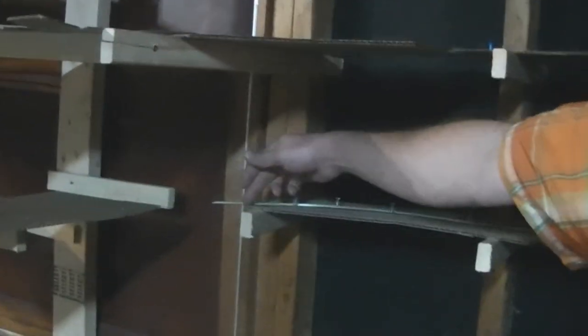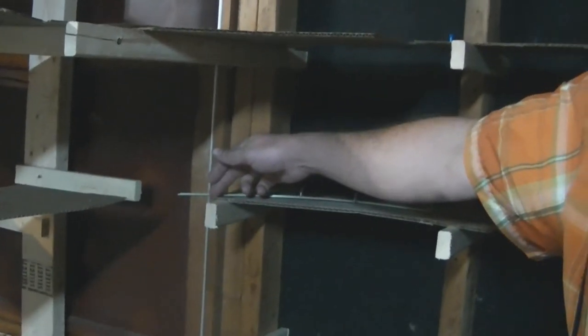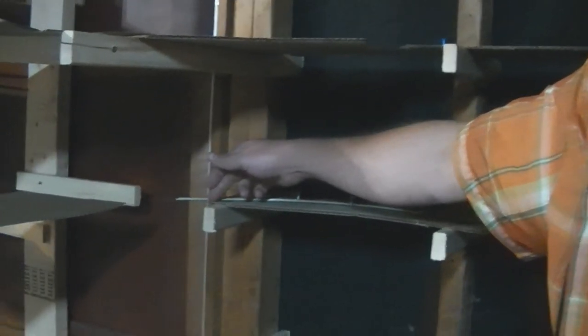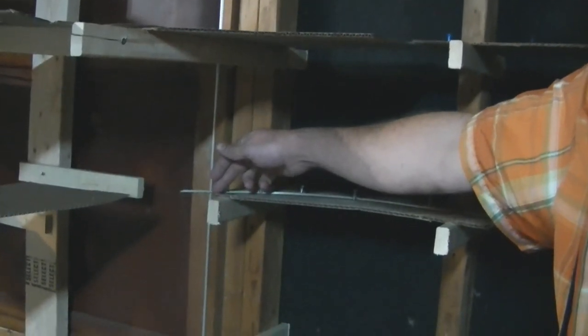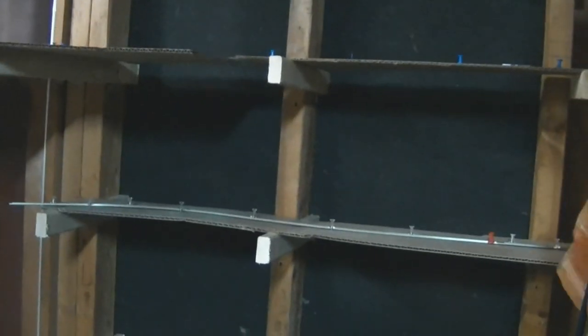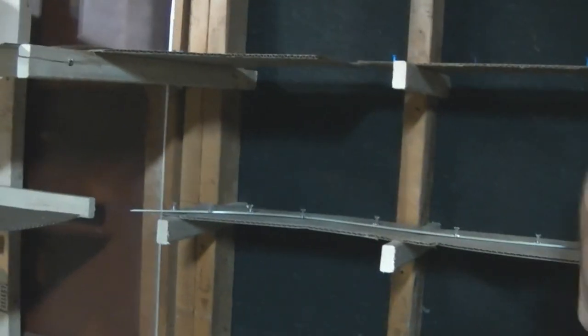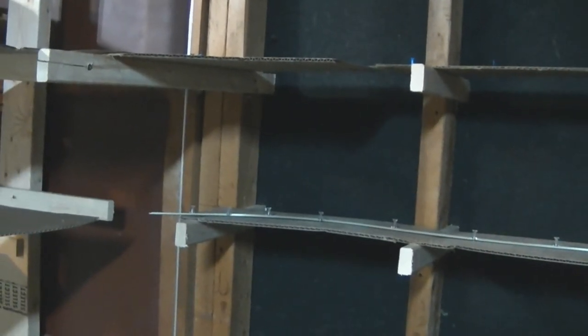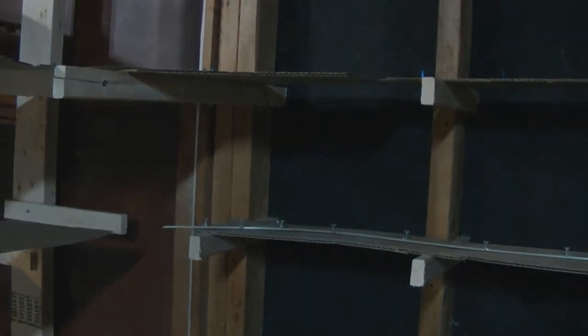I ran out of flex track here. There's 50 pieces of flex track in this main line from the hidden staging yard at Mount Vernon, at the throat of that yard to this point right here. It's 125 feet of main line. We get this readjusted, we'll get the rest up. This is about halfway through.